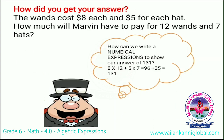How did you get the answer? First we need to frame a numerical expression: cost of van into number of vans plus cost of hat into number of hats — that is 8 into 12 plus 5 into 7 — equal to 131. So the total cost is rupees 131; he has to pay 131 rupees.